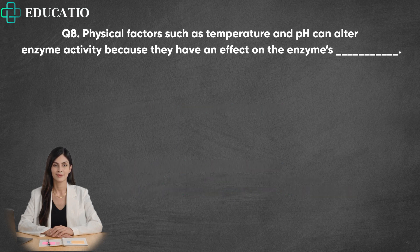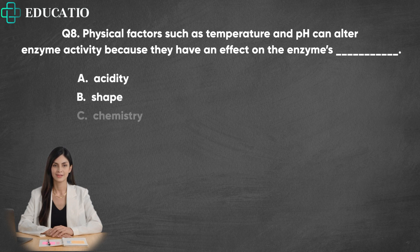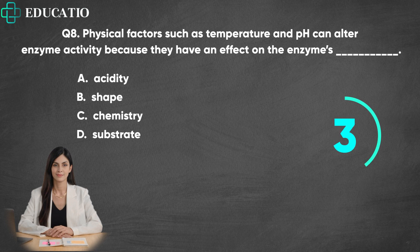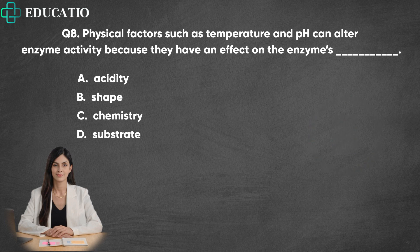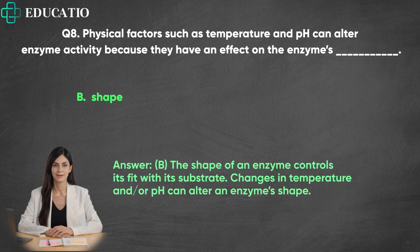Question 8. Physical factors such as temperature and pH can alter enzyme activity because they have an effect on the enzyme's: A. Acidity. B. Shape. C. Chemistry. D. Substrate. Answer: B. The shape of an enzyme controls its fit with its substrate. Changes in temperature and/or pH can alter an enzyme's shape.